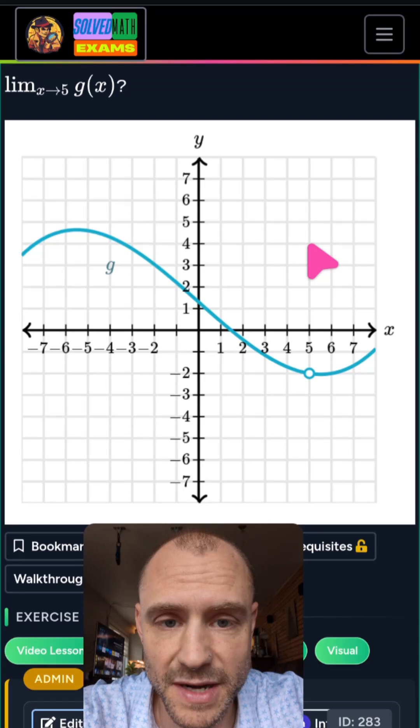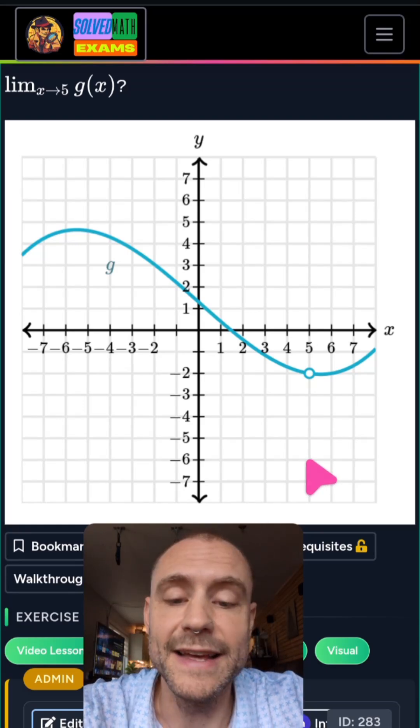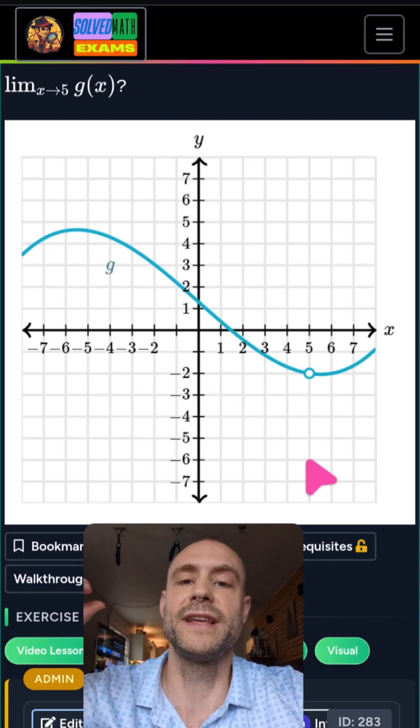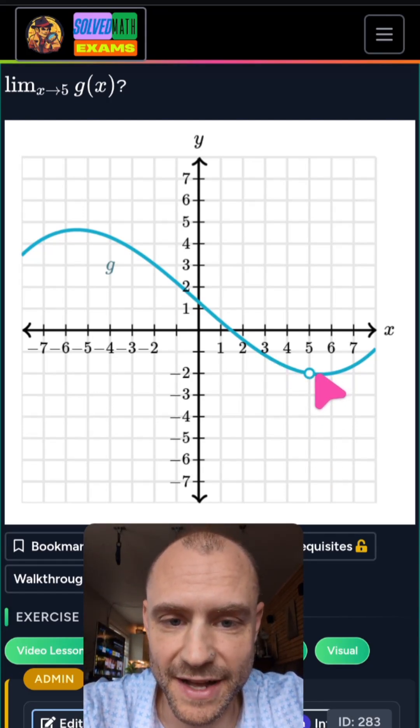The dot could have also been up here. It could have been up here. It could have been down here. It doesn't matter. For limits, we only care what happens as we get close to that function value.